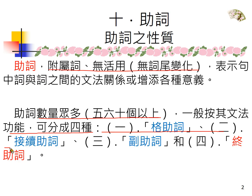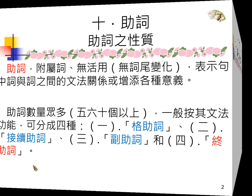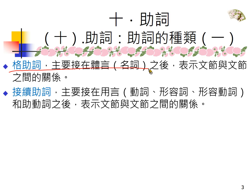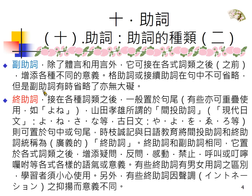格助词主要接在体言，也就是名词之后；接续助词接在用言——动词、形容词、形容动词，还有有词形变化的助动词之后；副助词跟终助词什么都可以接。终助词我们要记一下，它有间投助词的用法，可以放在句中哦。